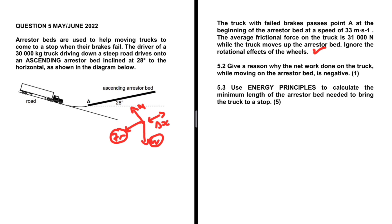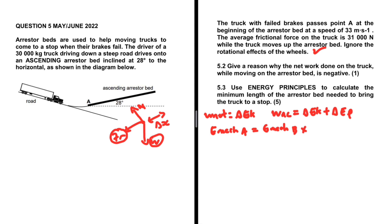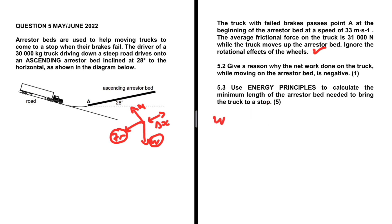For question 5.3, we use energy principles to calculate the minimum length of the arrestor bed needed to bring the truck to a stop. We have three equations available: the work-energy theorem (W-net equals change in KE), work done by non-conservative forces equals change in KE plus change in PE, and conservation of mechanical energy. Since there is a frictional force, the system is not isolated, so we will not use conservation of mechanical energy. I'll use the work-energy theorem.